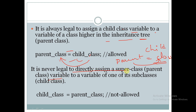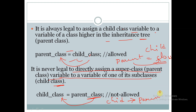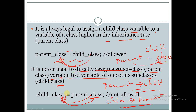It is never legal to directly assign a superclass (parent class) variable to a variable of one of its subclasses. A child class cannot point to a parent class, whereas a parent class can point to a child class. These are the two conditions to remember.